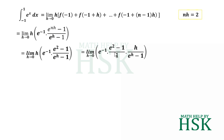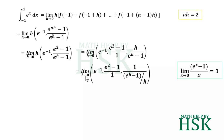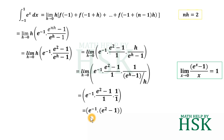This can be further written as e to the power of minus 1 into e squared minus 1, with the h outside the bracket written as h upon e to the power of h minus 1. Applying the standard limit formula — limit of x tends to 0, e to the power of x minus 1 upon x equals 1 — this term becomes 1. So I get e to the power of minus 1 into e squared minus 1, which gives e to the power of 1 minus e to the power of minus 1, or e minus 1 upon e, which is the required answer.